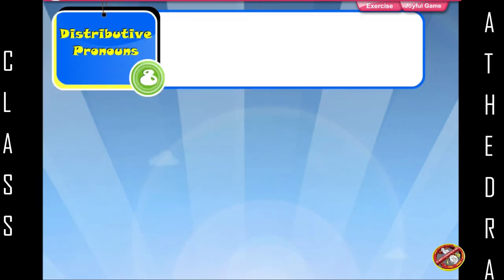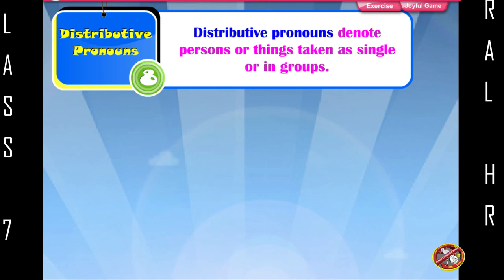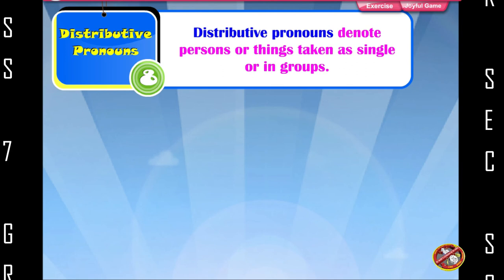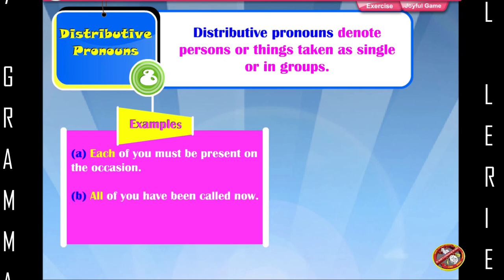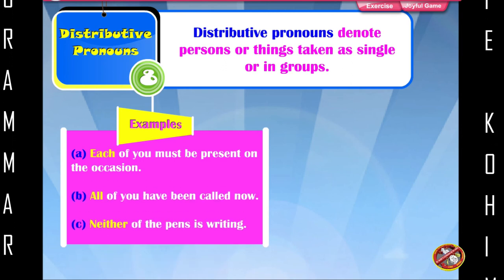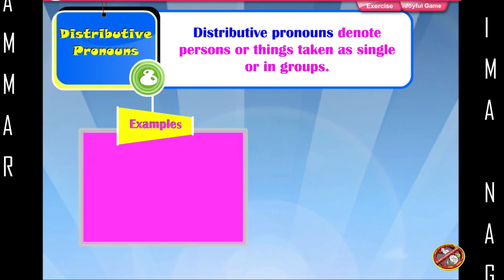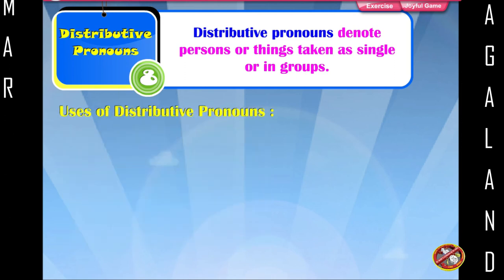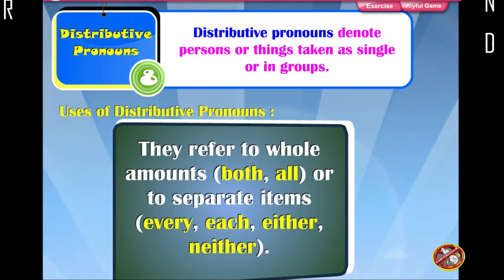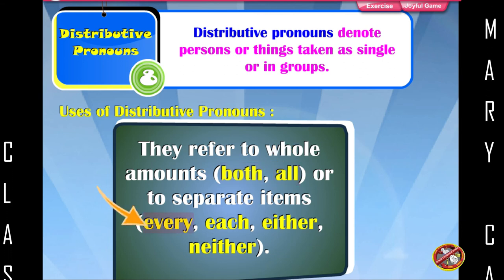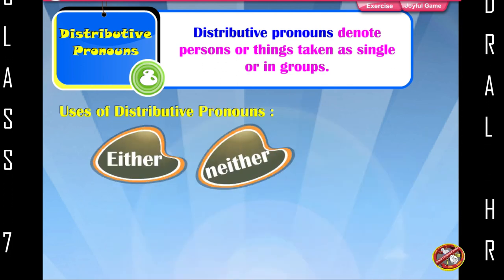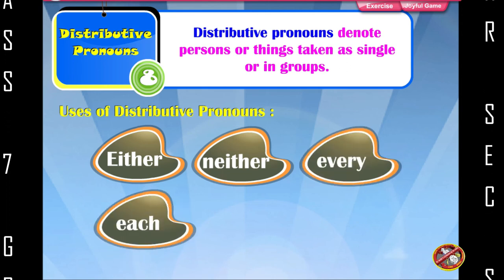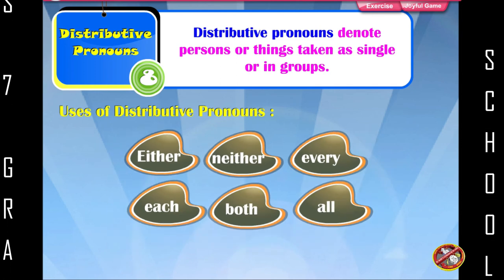Distributive pronouns denote persons or things taken as single or in groups. Examples: Each of you must be present on the occasion. All of you have been called now. Neither of the pens is writing. They refer to whole amounts — both, all — or to separate items — every, each, either, neither. Every, each, both, and all are distributive pronouns.